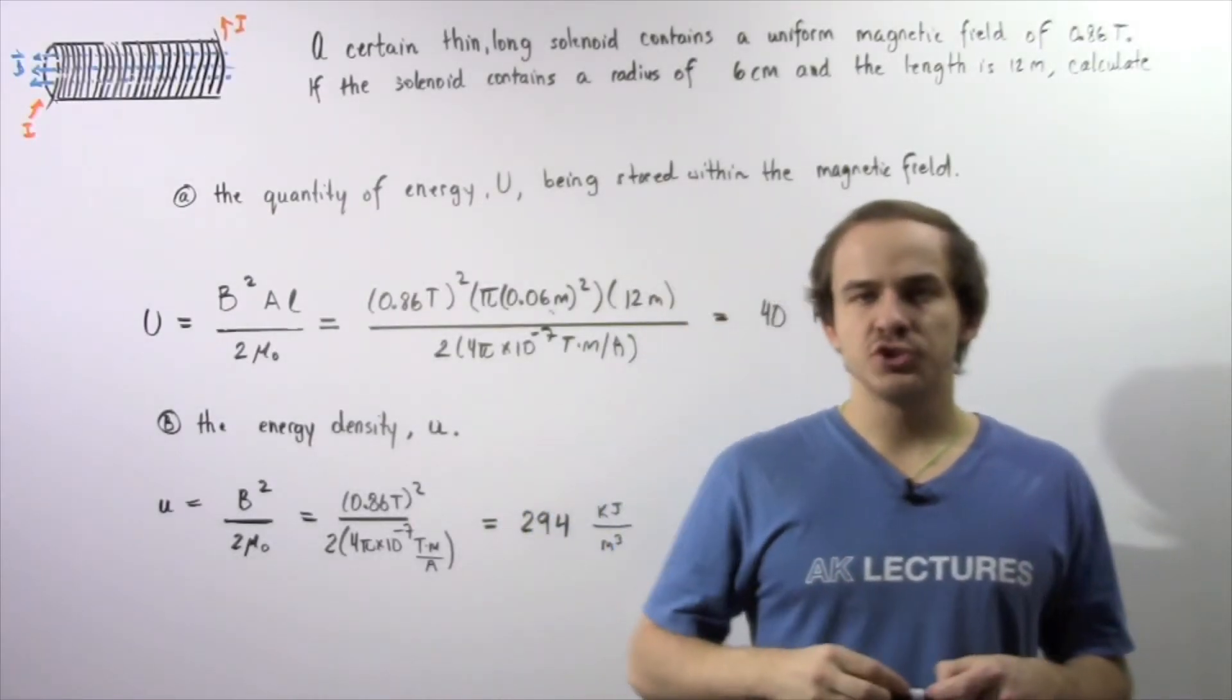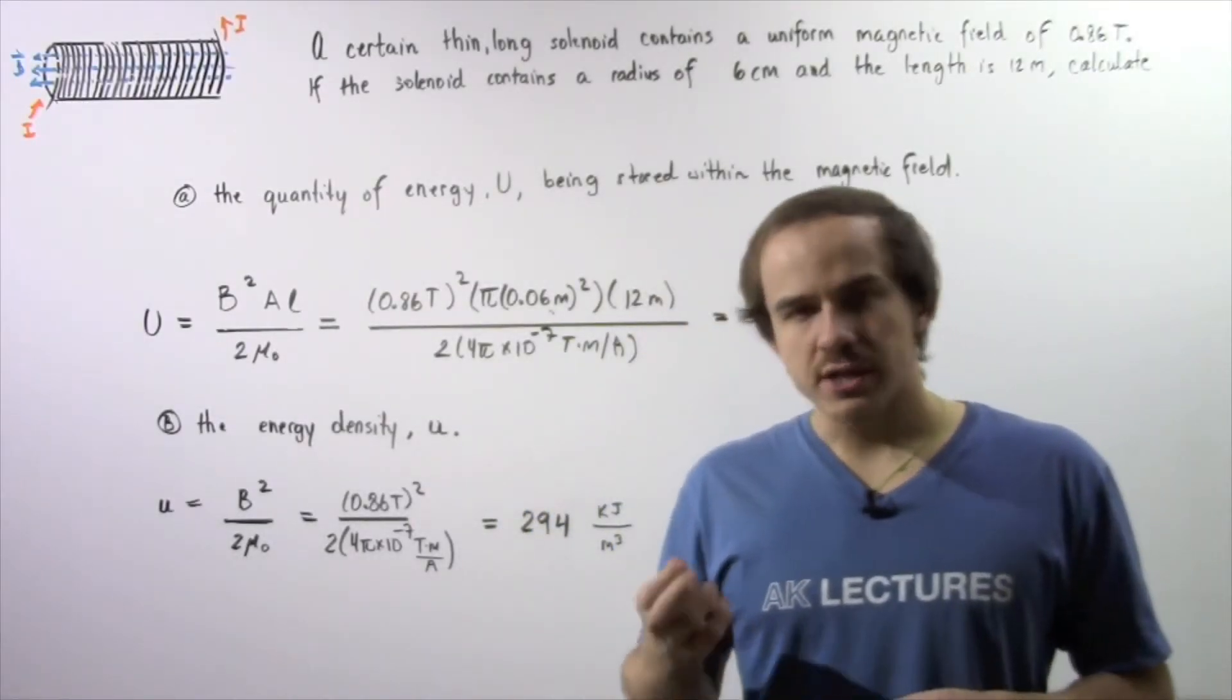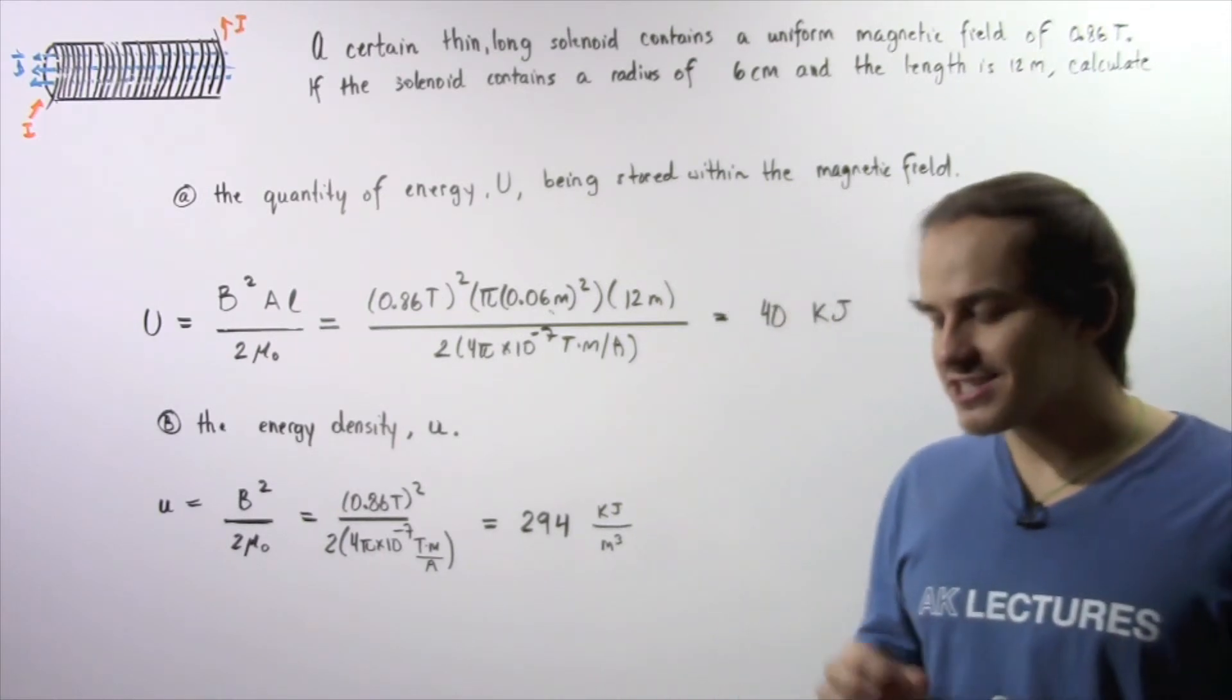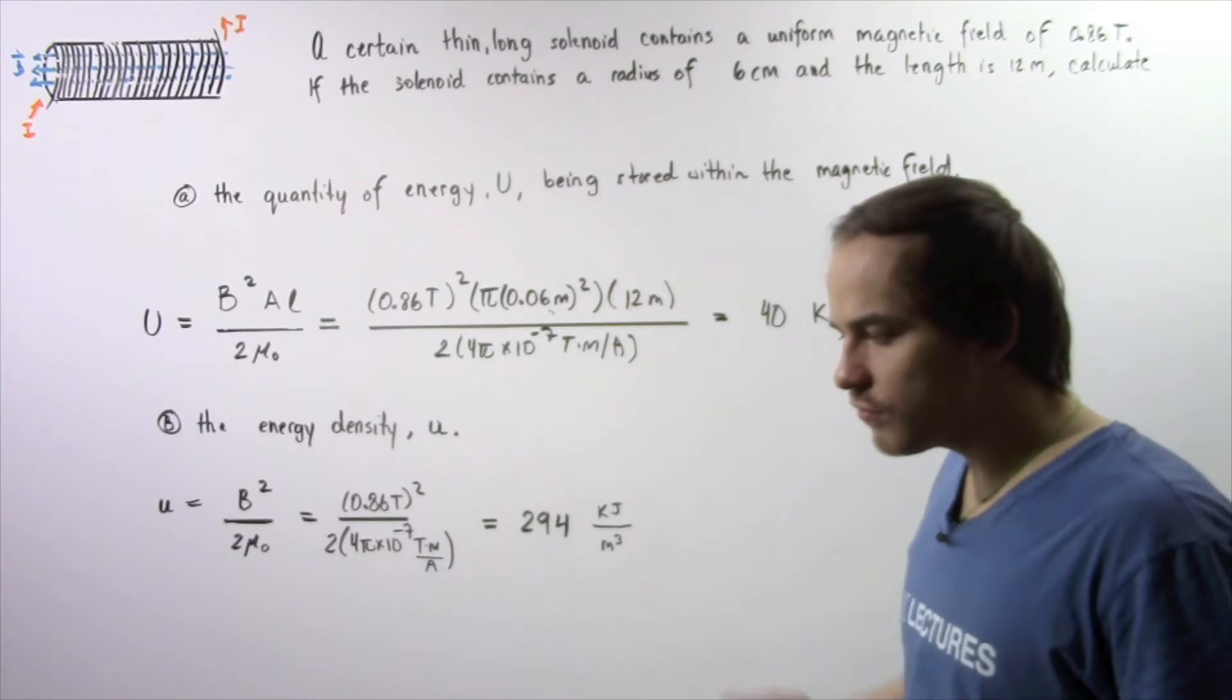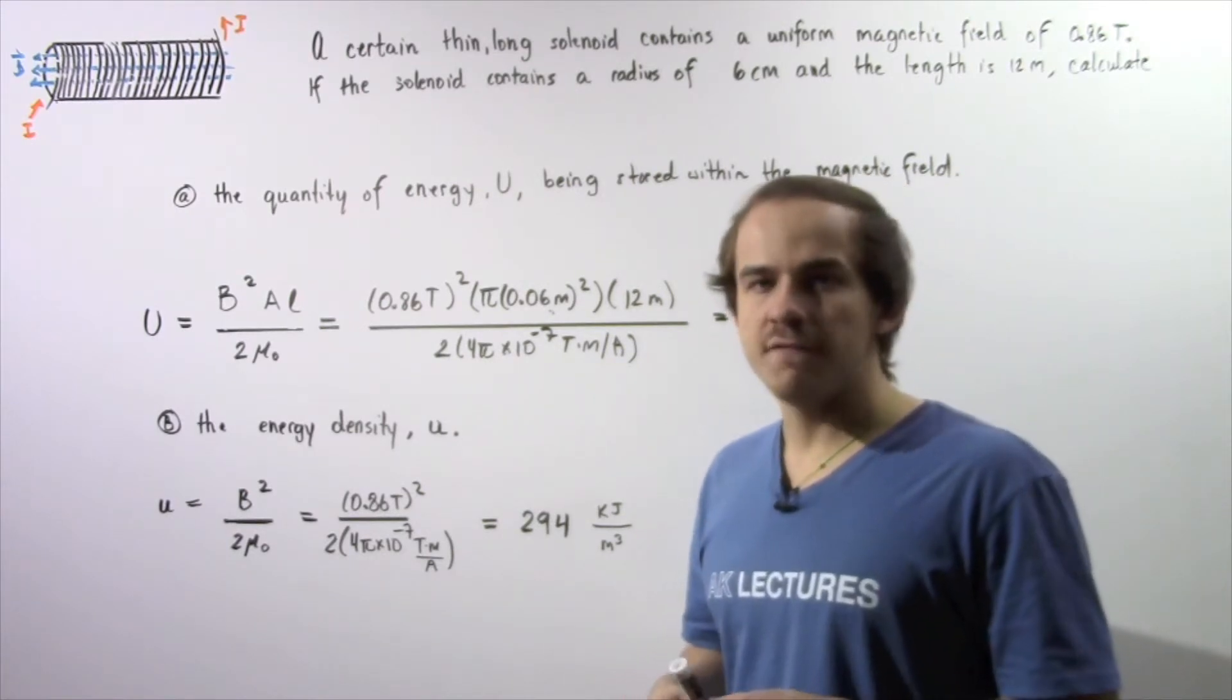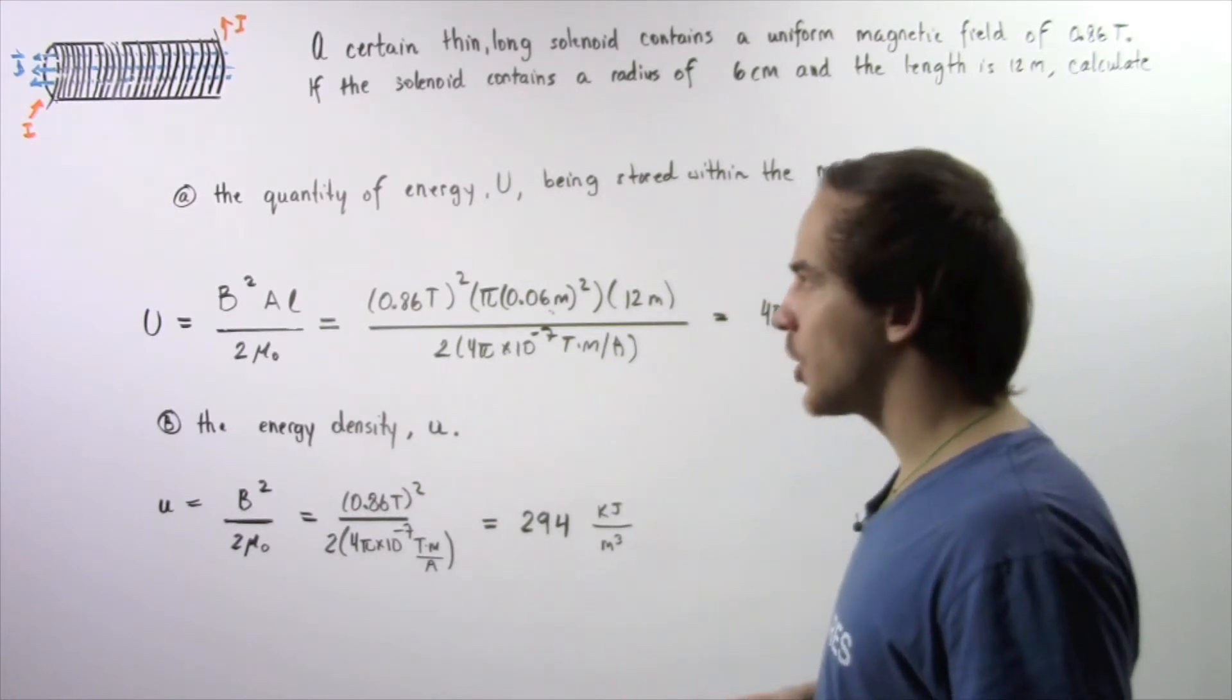In the previous lecture we essentially said that energy that is stored within an inductor is stored within the magnetic field that is produced inside the loops of wire as a result of our alternating electric current.